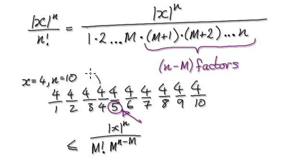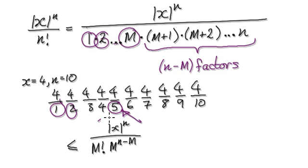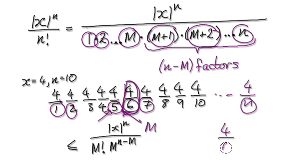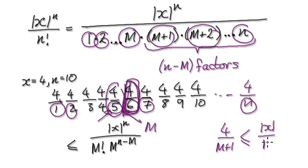So this thing here, you can imagine it as: here you've got 1, 2, and then up to our m. This is our magical m. And then this will be m plus 1, which is this bit here; m plus 2, which is this bit here; and then all the way to n. But if you look at this and compare the fraction 4 over 6 — well, 4 over 6 corresponds to m plus 1, which is 5 here. This fraction will be less than or equal to x over m.